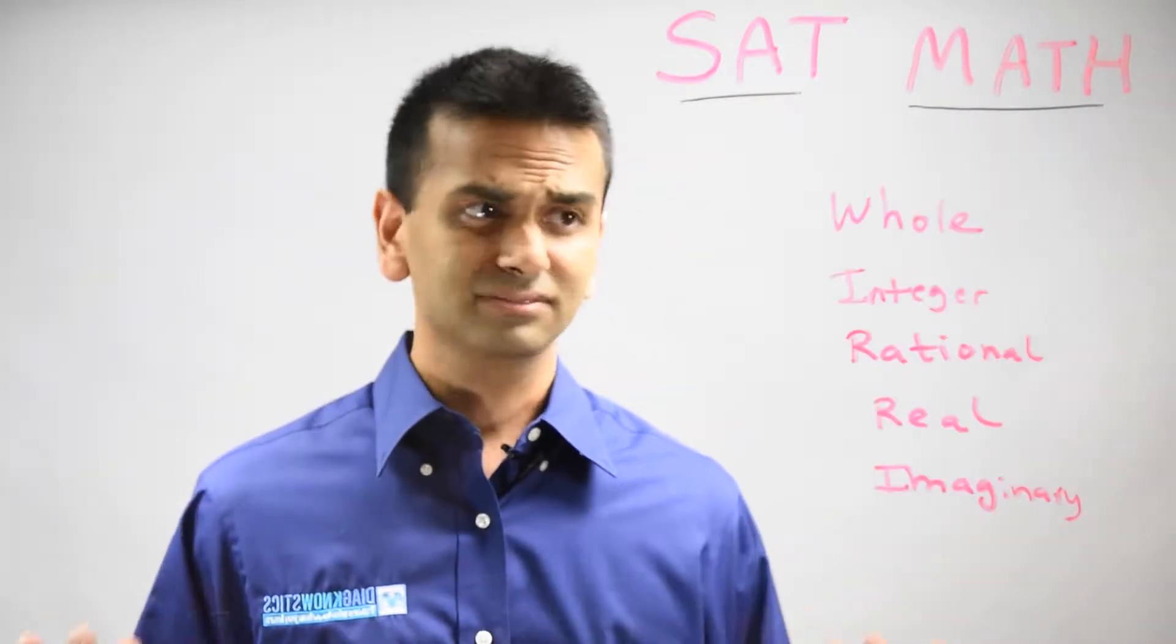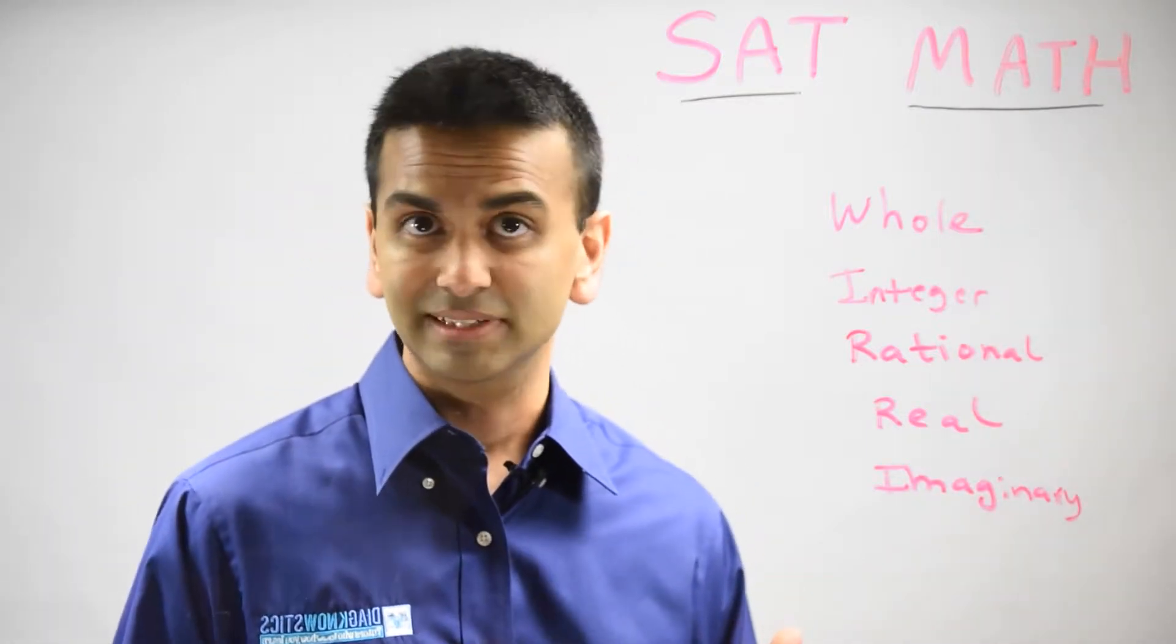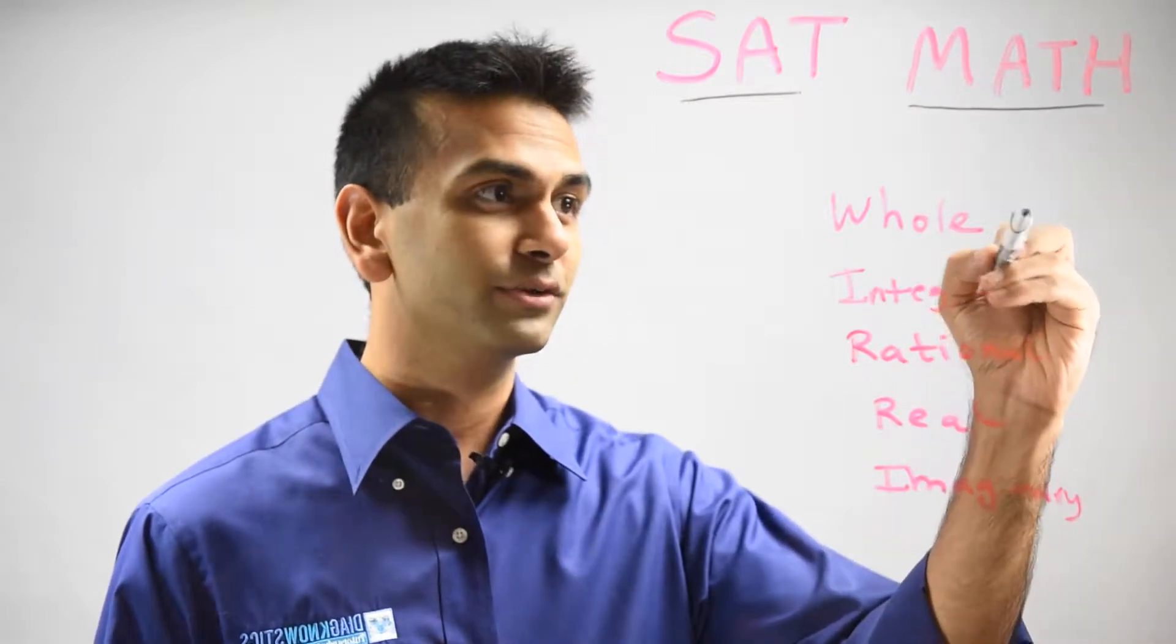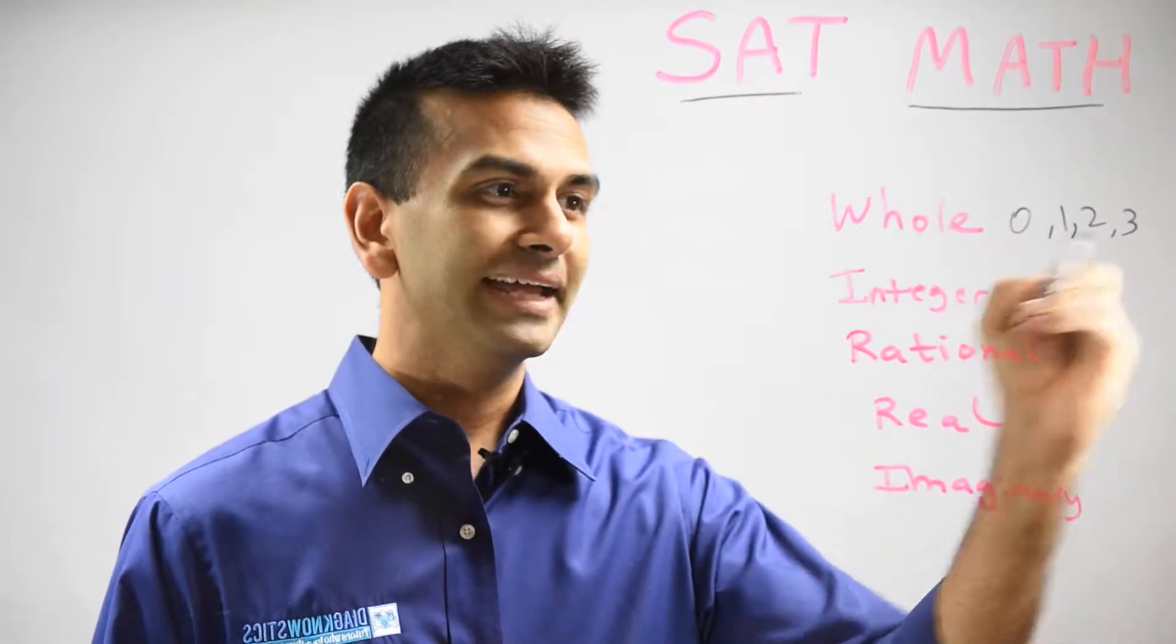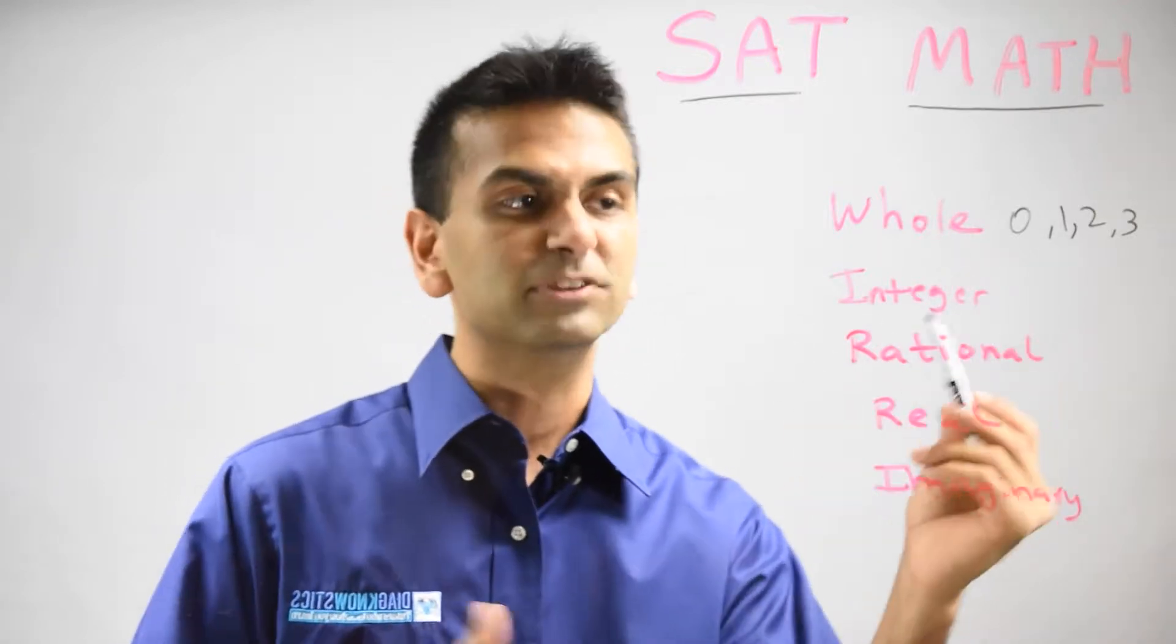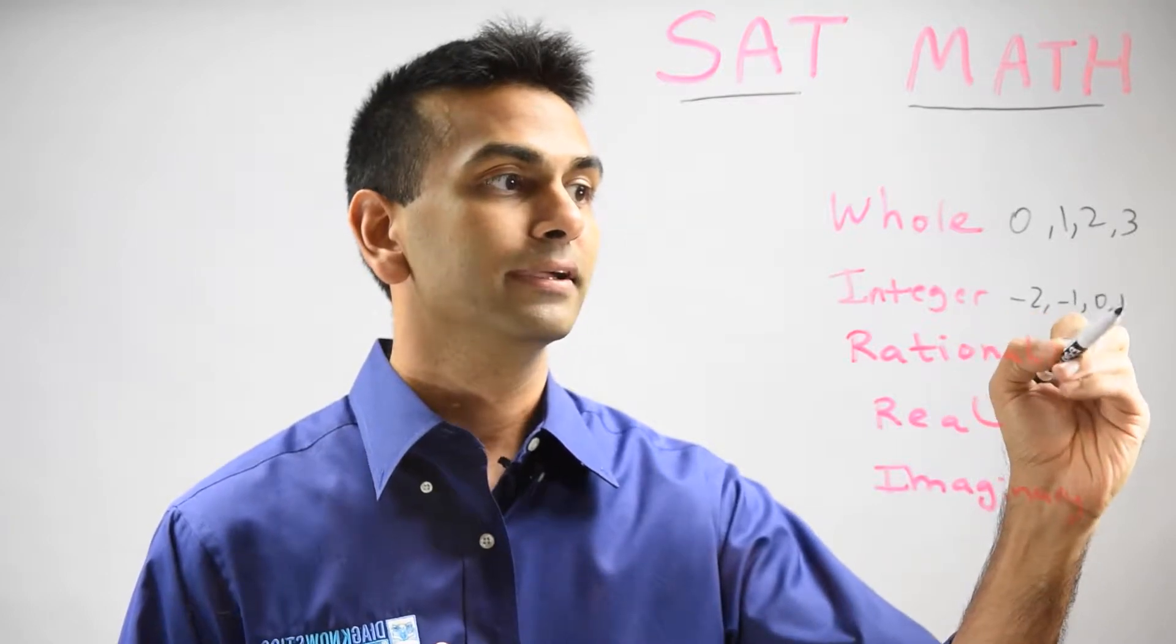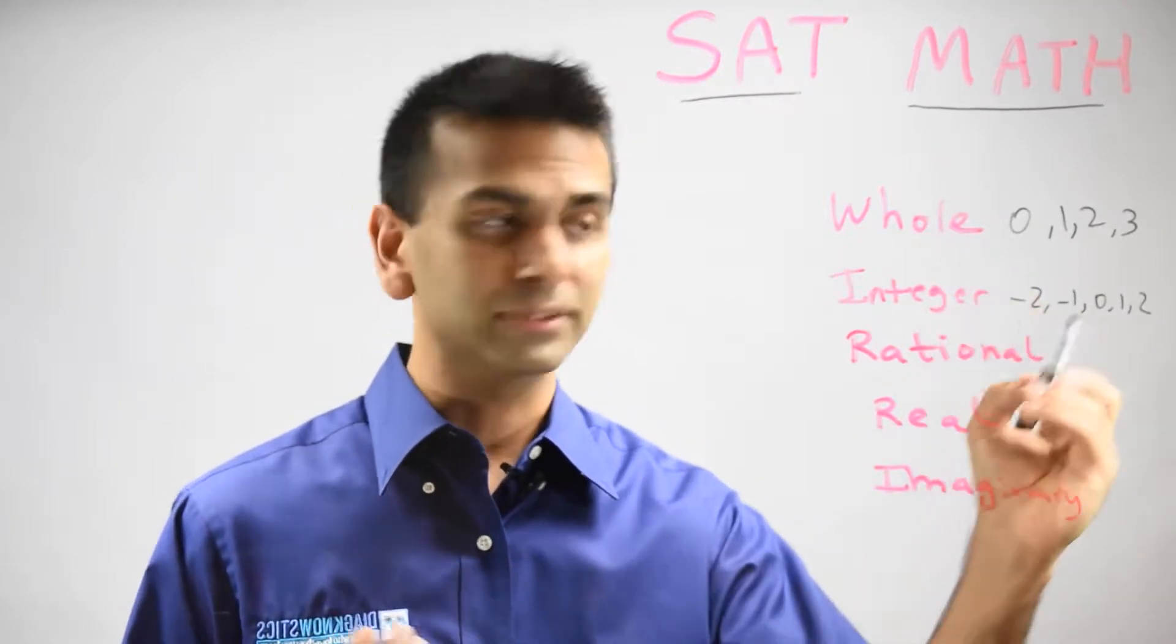So first of all, what are the different types of numbers out there? Well, whole numbers are just your basic counting numbers: zero, one, two, three and so on. Integers are basically still your whole numbers, but also include the negatives. So negative two, negative one—they're integers but they're not whole numbers.